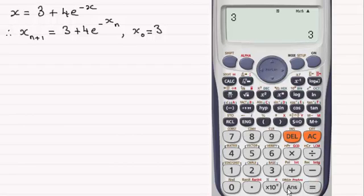Now we enter our iterative equation, so it's 3 plus 4 times e to the power minus x_n. On this calculator the e button is up here - I need to press shift and